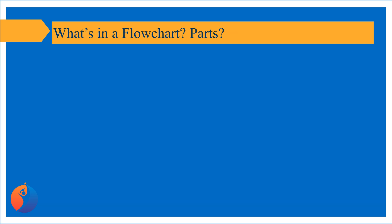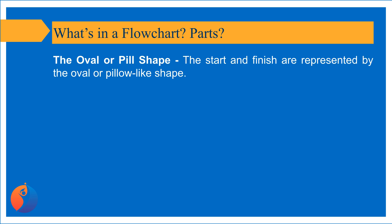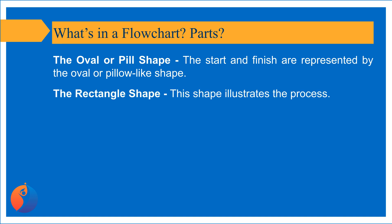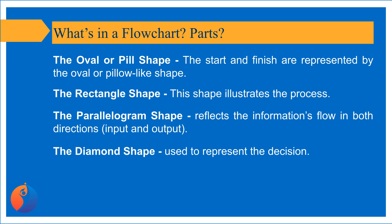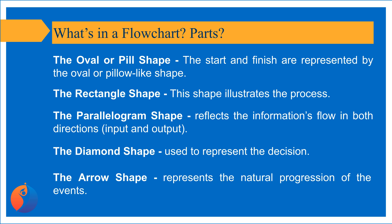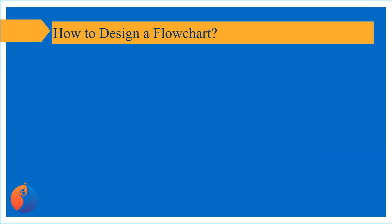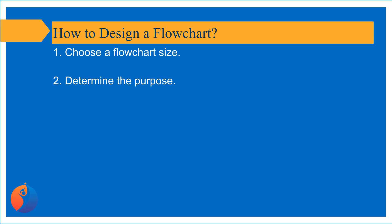Flowchart shapes: The oval or pill shape represents the start and finish. The rectangle shape illustrates the process. The parallelogram shape reflects the information's flow in both directions — input and output. The diamond shape is used to represent a decision. The arrow shape represents the natural progression of the events.